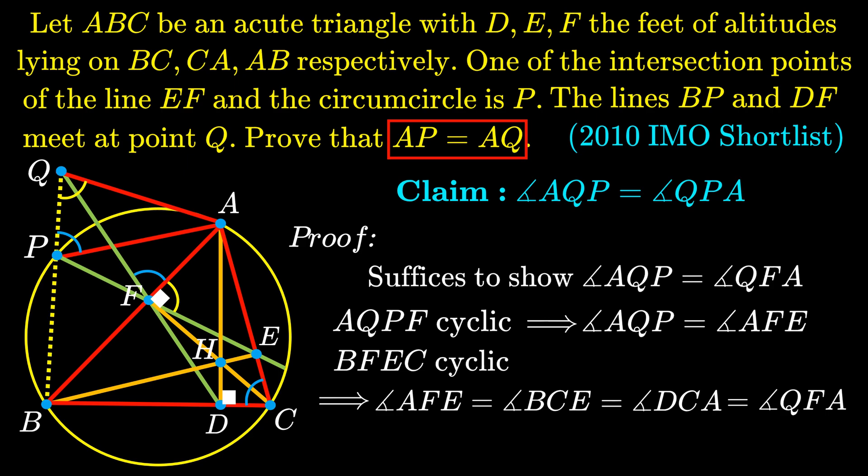And so, the directed angle of AQP is equal to the directed angle of QFA, which means that the two directed angles AQP and QPA are indeed the same. Thus, this just means that the length AP is equal to the length AQ.